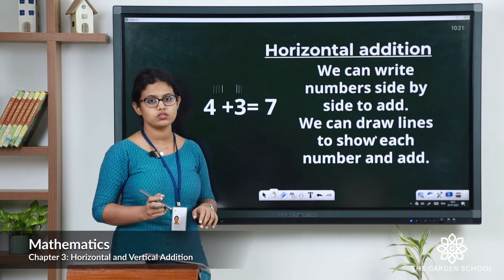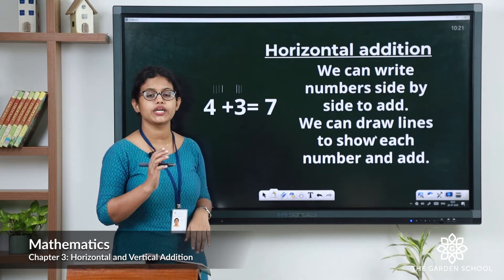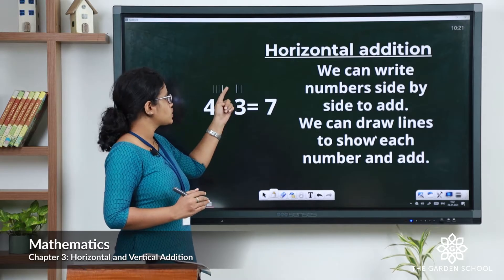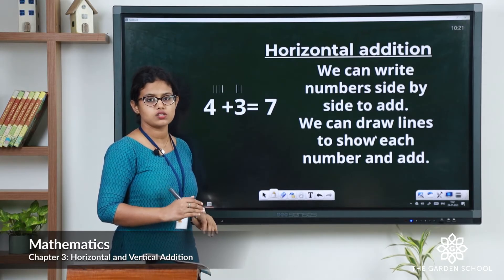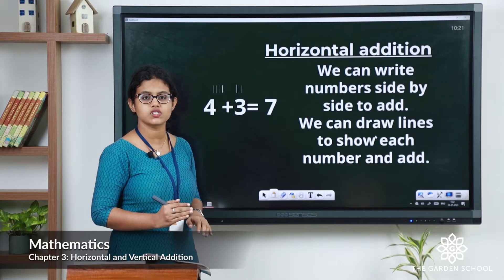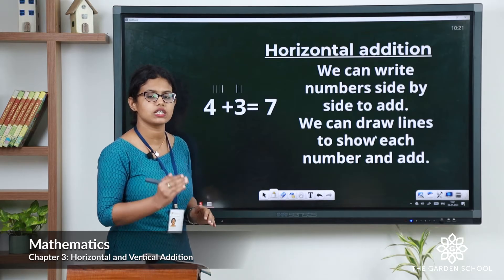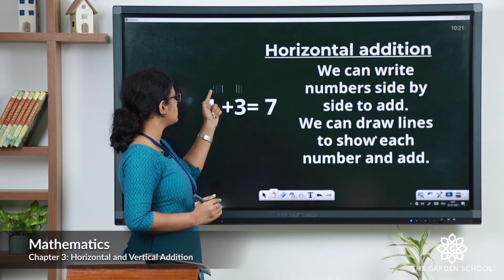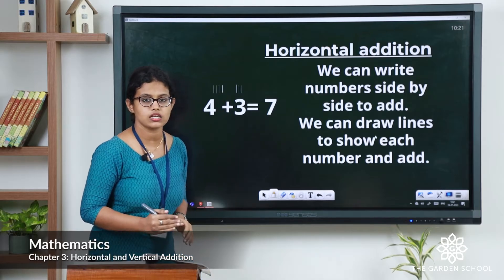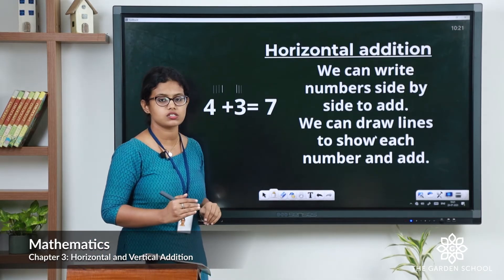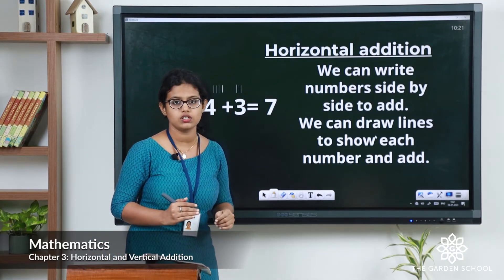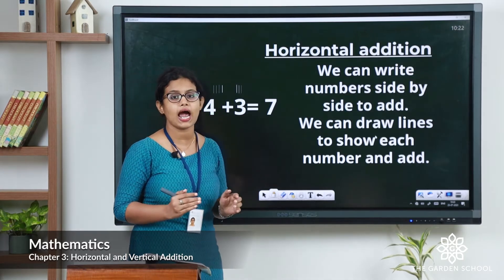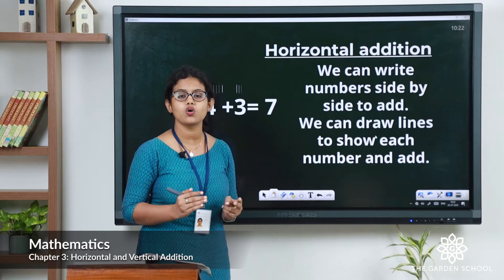For number 4, you draw 4 lines, then add 3 lines. So 4 plus 3 gives you 7 if you count the number of lines. In 4 there are 4 lines — 1, 2, 3, 4 — plus 3 lines — 1, 2, 3 — and it gives you a total of 7. This is how we add two numbers horizontally.